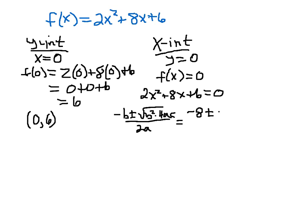This will be minus 8, plus or minus, the square root of 8 squared is 64, minus, 4 times 2 times 6, 4 times 2 is 8, 8 times 6 is 48, so that will be minus 48, all over 2 times A, which is 2. And remember, this is going to be X. We're solving for X when our output is 0.